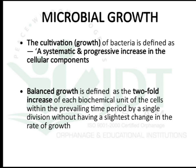Growth or cultivation of bacteria is defined as a systematic progressive increase in the cellular component. The increasing cell component may be of two types: either by increasing the cell weight or mass, or by increasing the cell number. Balanced growth is defined as a two-fold increase of each biochemical unit of the cell within the prevailing time period by a single division, without any change in the rate of growth.